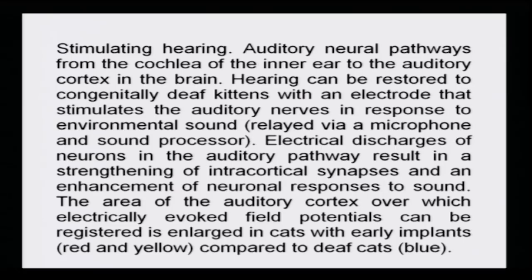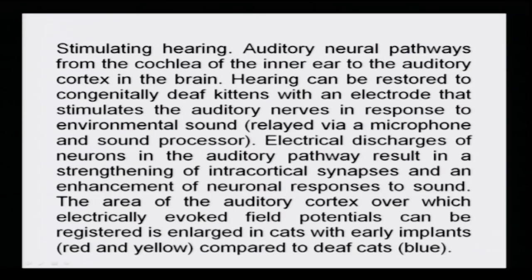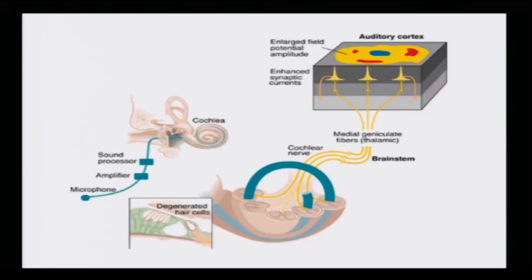Hearing can be restored — stimulating the auditory neural pathway from the cochlea of the inner ear to the auditory cortex. It was shown in congenitally deaf kittens using an electrode that stimulates the auditory nerves in response to environmental sound relayed by a microphone and sound processor. Electrical discharges of neurons in the auditory pathway result in a strengthening of intracortical synapses and enhancement of neuronal response to sound. The area of auditory cortex over which electrically evoked field potentials can be registered is enlarged in cats with early implants (red and yellow) compared to deaf cats (blue).